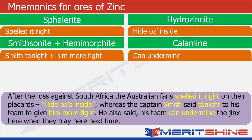Close your eyes and imagine: Australian fans are very emotional and after the beating South Africa gave them, they are ashamed and angry. They are holding a placard saying 'hide Aussies inside,' wanting their players to hide their faces, and they have spelled it right. Meanwhile, captain Smith in his press conference tonight asked his team to give him more fight, and he stressed that his team can undermine the zincs created during this series when they tour South Africa next time.